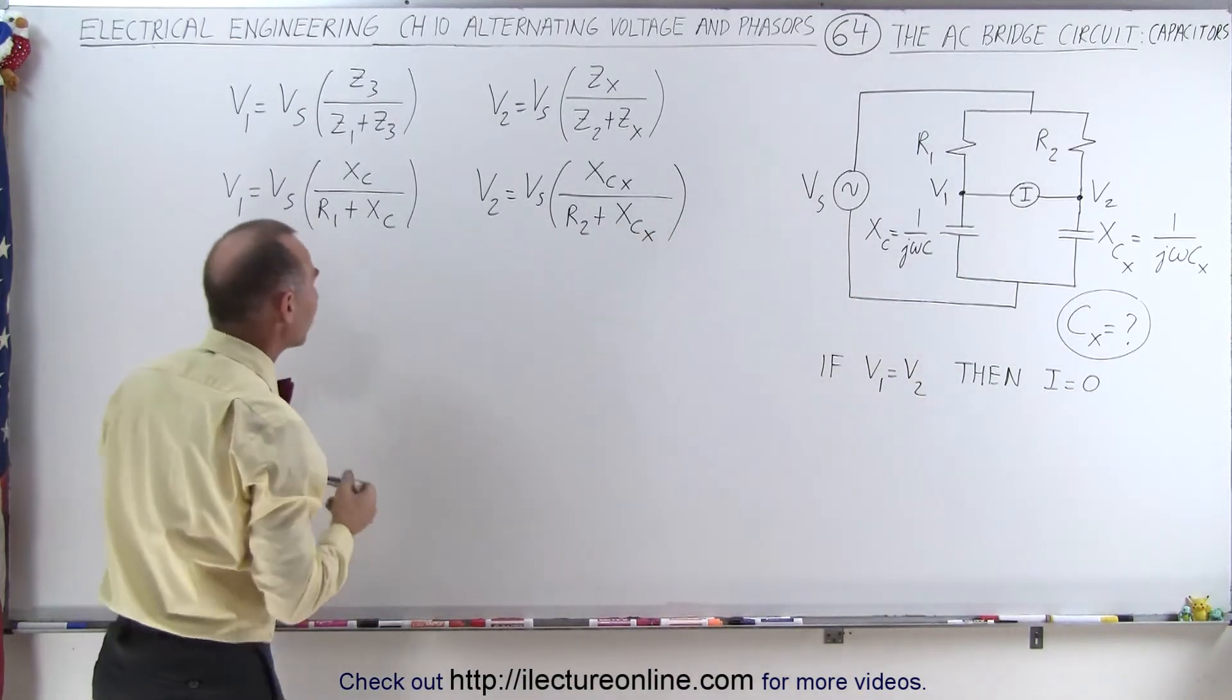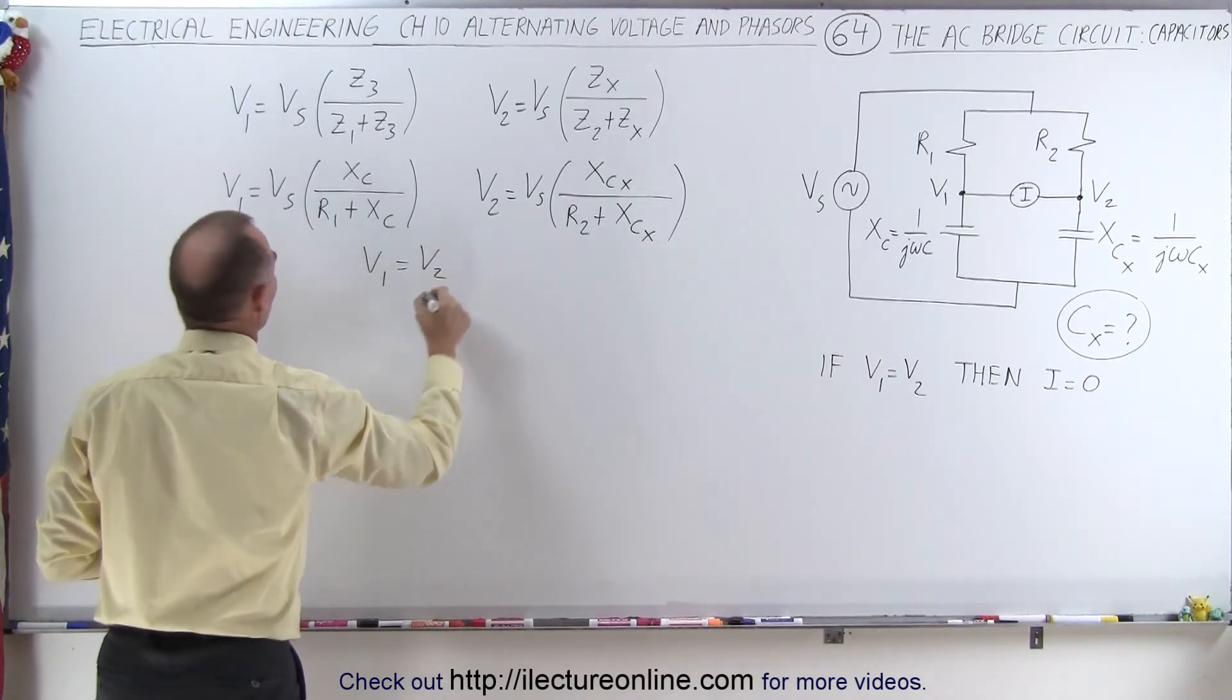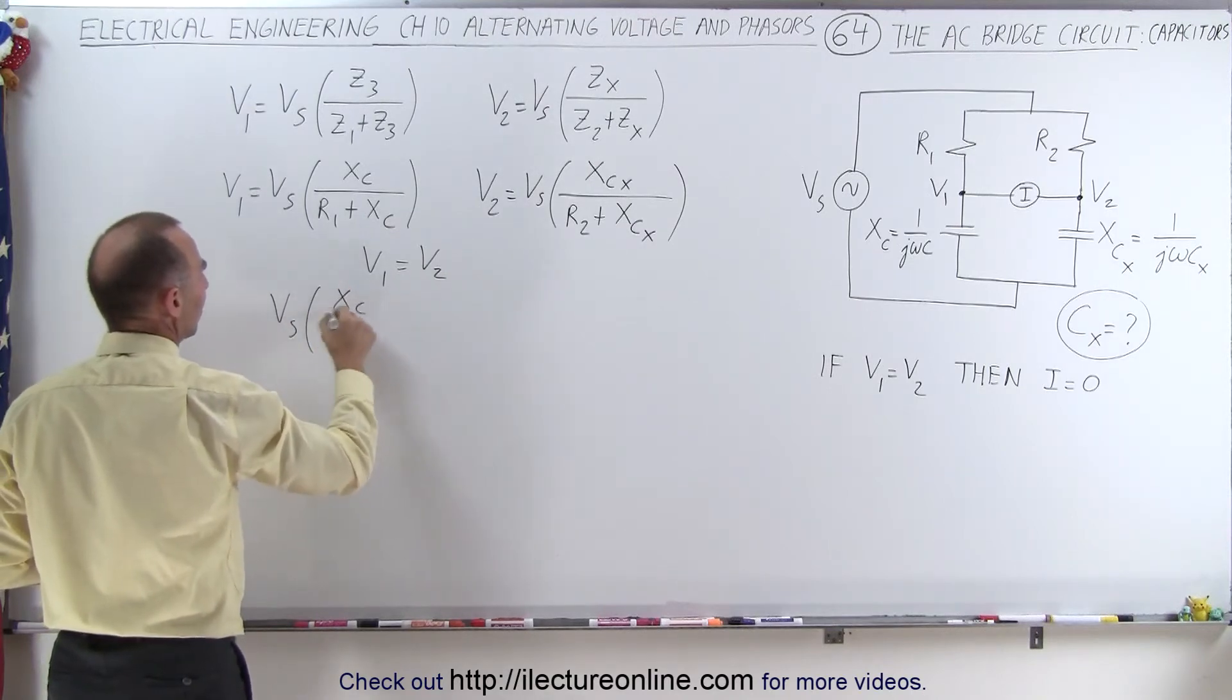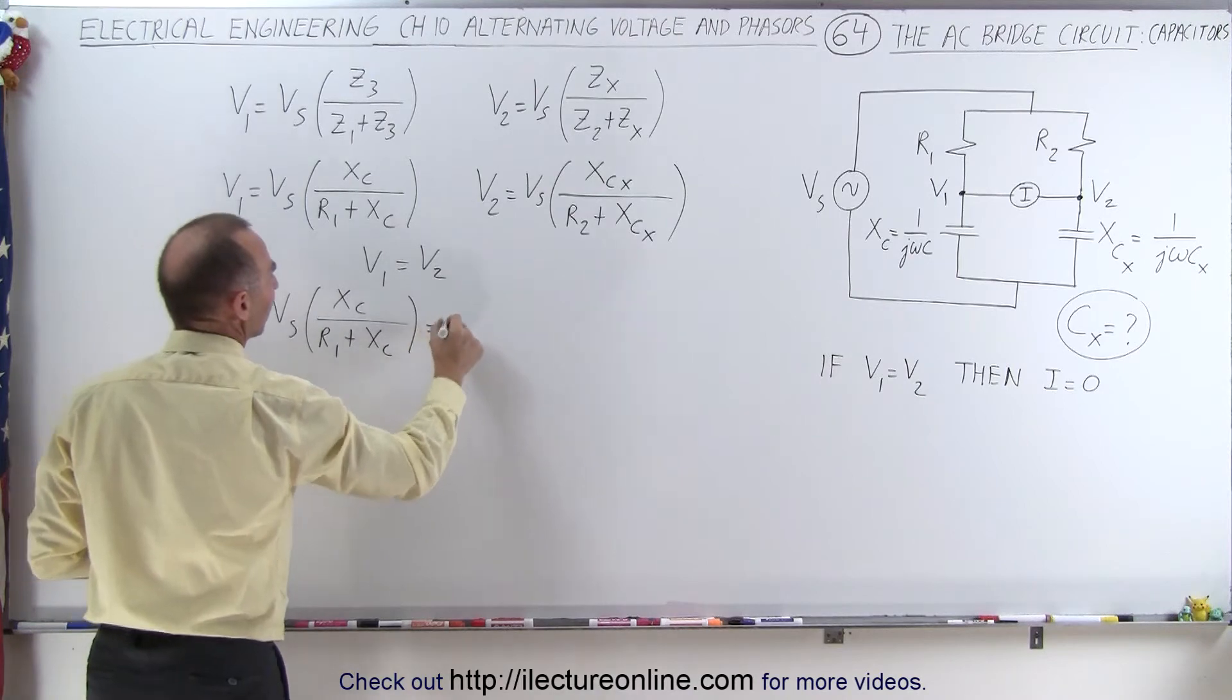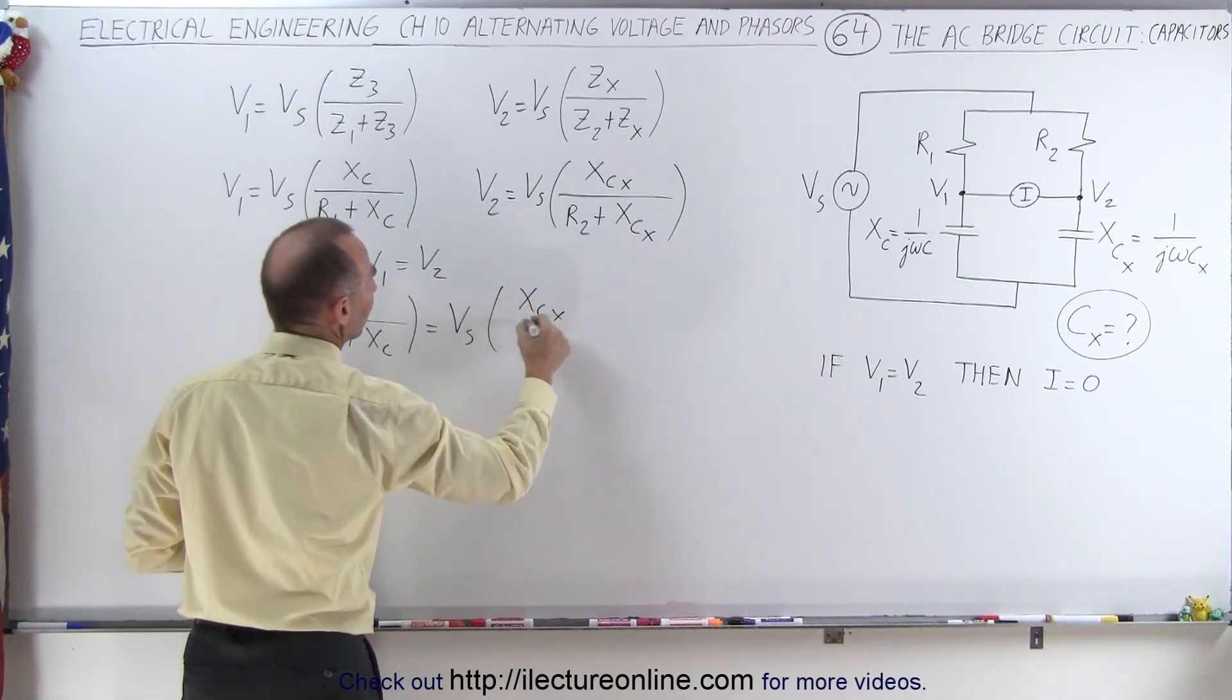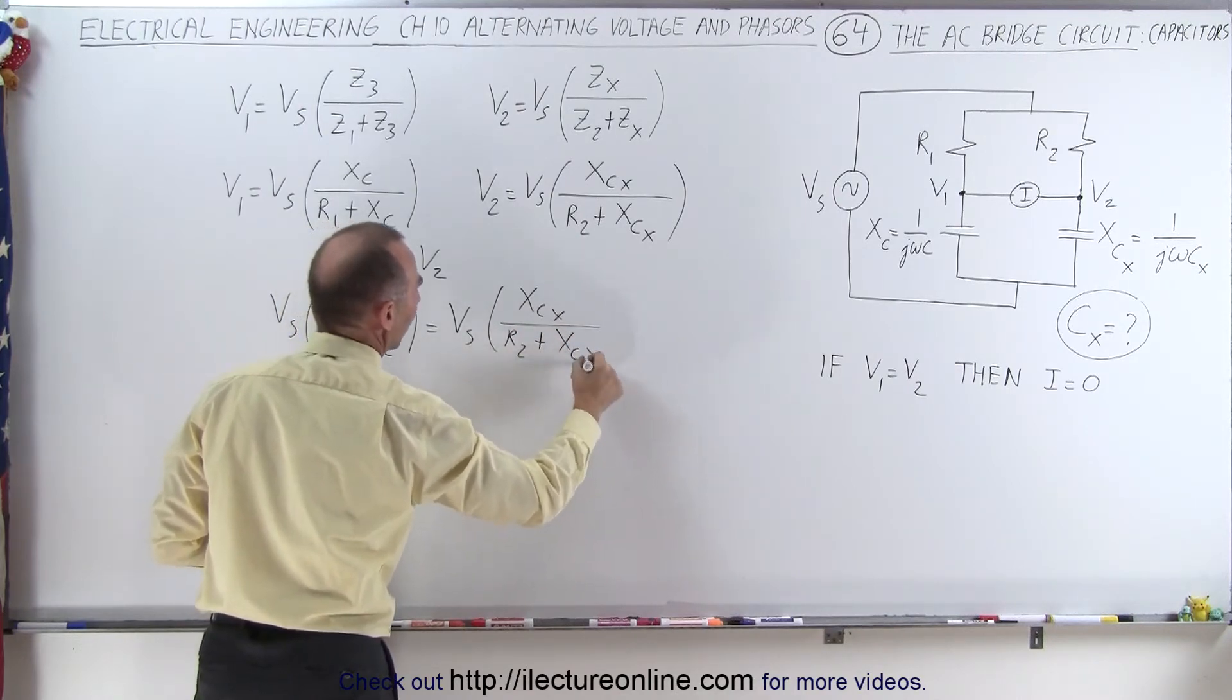We can then set the two equations equal to one another. We can say that V1 is equal to V2, which means that V sub s times X sub c over R1 plus X sub c is therefore going to be equal to V sub s times X sub c sub x divided by R2 plus X sub c sub x.